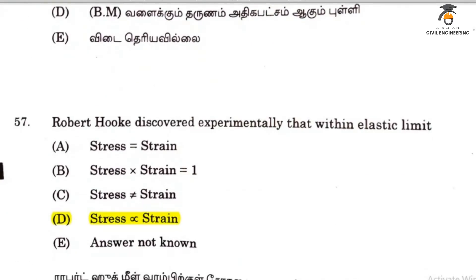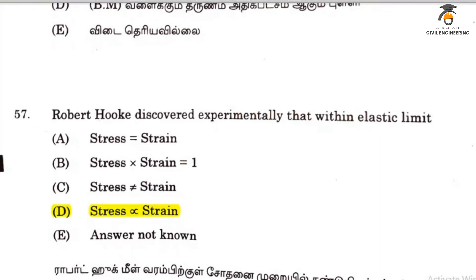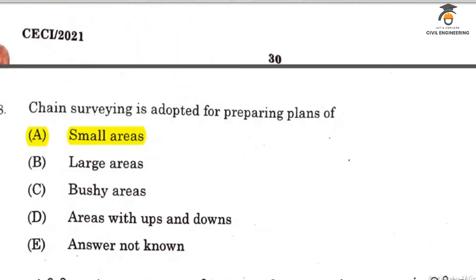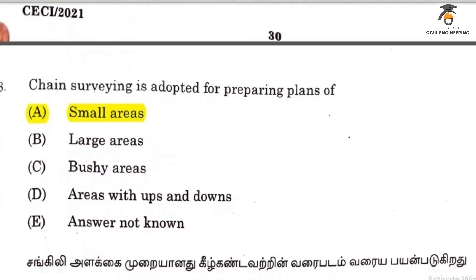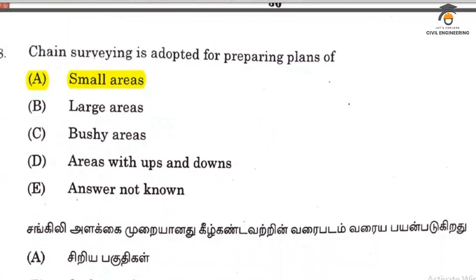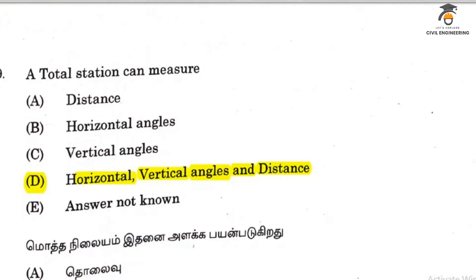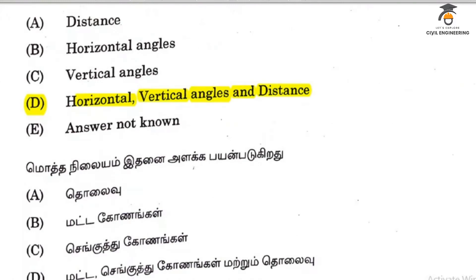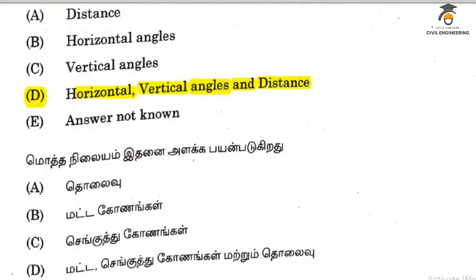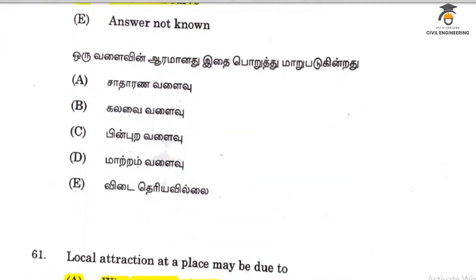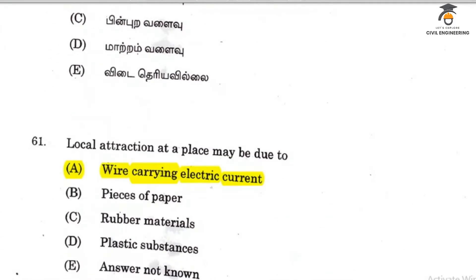Robert Hooke discovered Hooke's law: stress is directly proportional to strain. Total station measures horizontal, vertical, and distance measurements. A curve of varying radius is known as a transition curve.